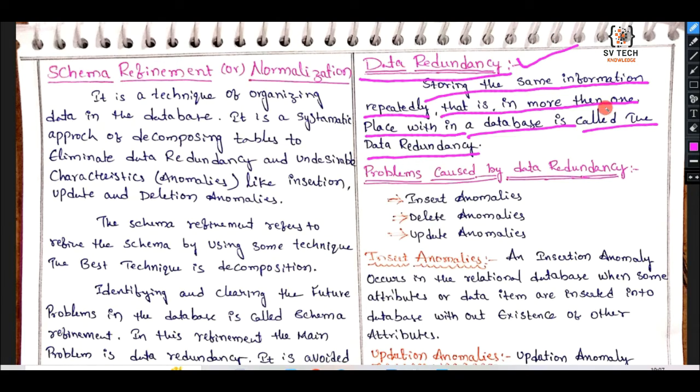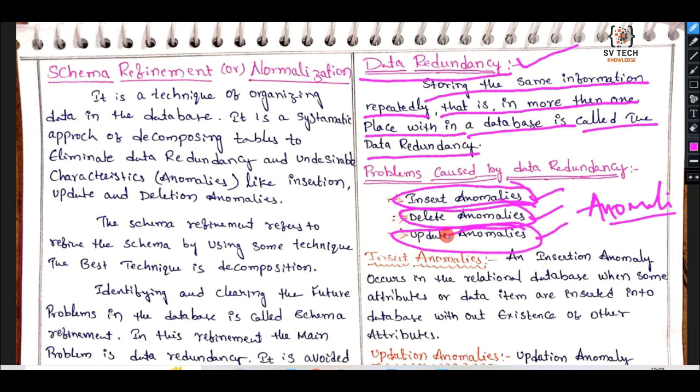Data redundancy is one problem. We have three types of problems, three types of anomalies. Anomaly means the problem caused by data redundancy. Those anomalies are insertion anomaly, deletion anomaly, update anomaly. So, problems caused by data redundancy.